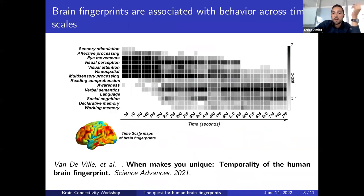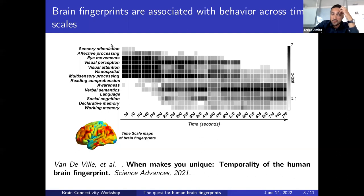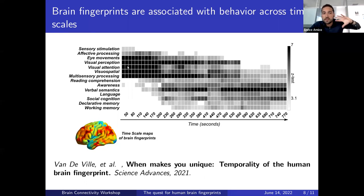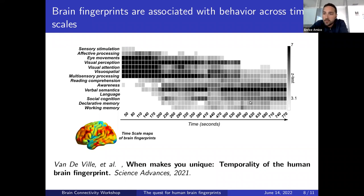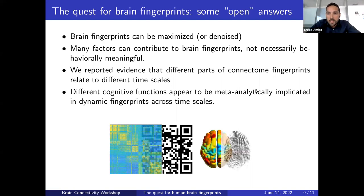When we then matched our time-scale maps of brain fingerprints with the NeuroSynth database of behavioral scores, we found that at very short time scales there are associations with multi-sensory processing, visual attention, and perception. Moving toward slower time scales, we started to see higher-order cognitive functions such as social cognition, declarative memory, and working memory.